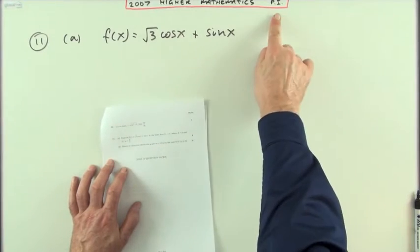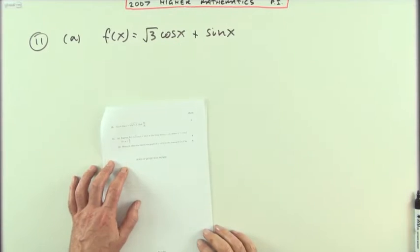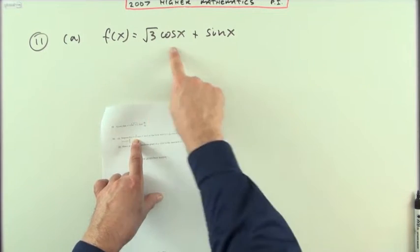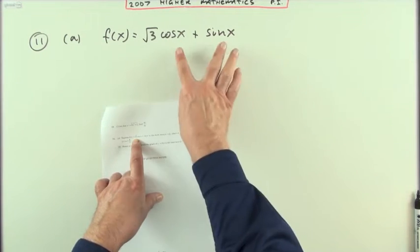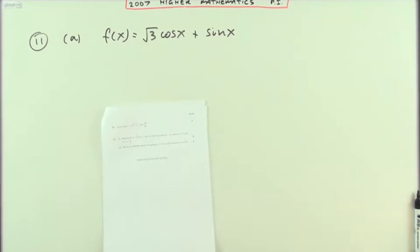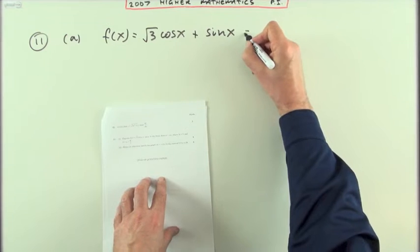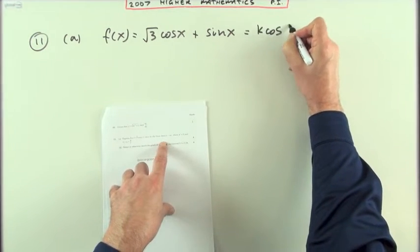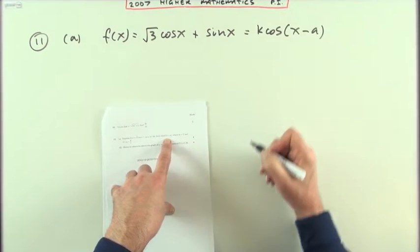Number 11, the last question in paper 1 of the 2007 Higher Maths, part A. Express this, notice you've got the same angle here, express this in the form of k cos x minus A. It's the wave function question, and it says that k is greater than zero.